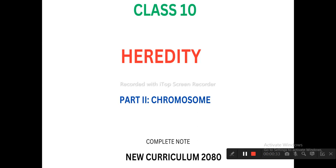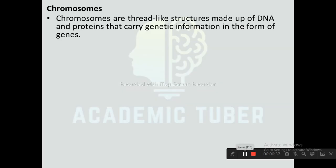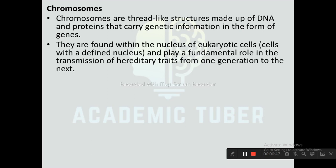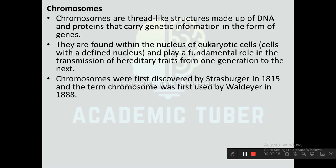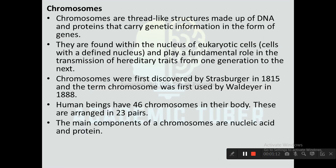Chromosomes are thread-like structures made up of DNA and proteins that carry genetic information in the form of genes. They are found within the nucleus of eukaryotic cells and play a fundamental role in the transmission of hereditary traits from one generation to the next. Chromosomes were first discovered by Strasburger in 1815, and the term 'chromosome' was first used by Waldeyer in 1888. Human beings have 46 chromosomes arranged in 23 pairs.